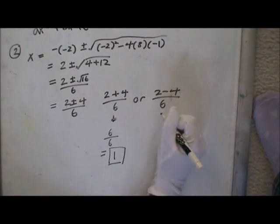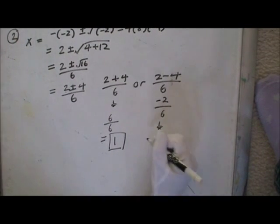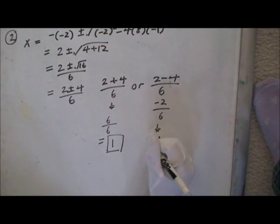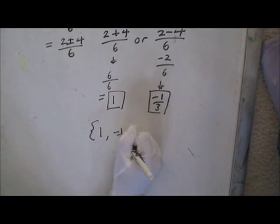And this one is negative 2 over 6, which equals negative 1 third. So for this one, there are two solutions, 1 and negative 1 third.